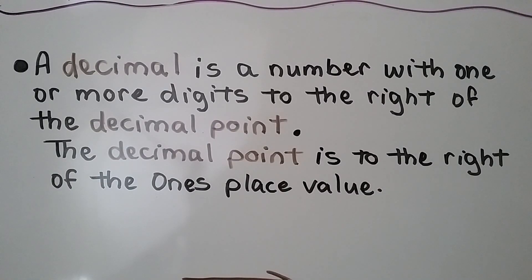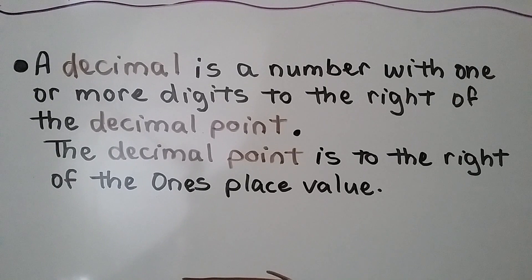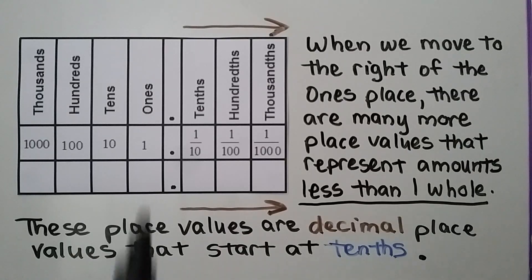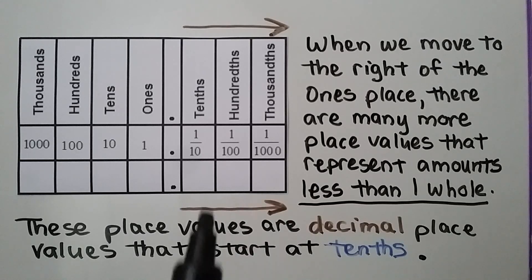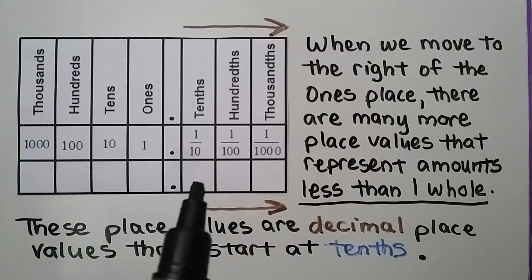A decimal is a number with one or more digits to the right of the decimal point. The decimal point is to the right of the ones place value. There are many more place values that represent amounts less than one whole, and these place values are decimal place values that start at tenths.